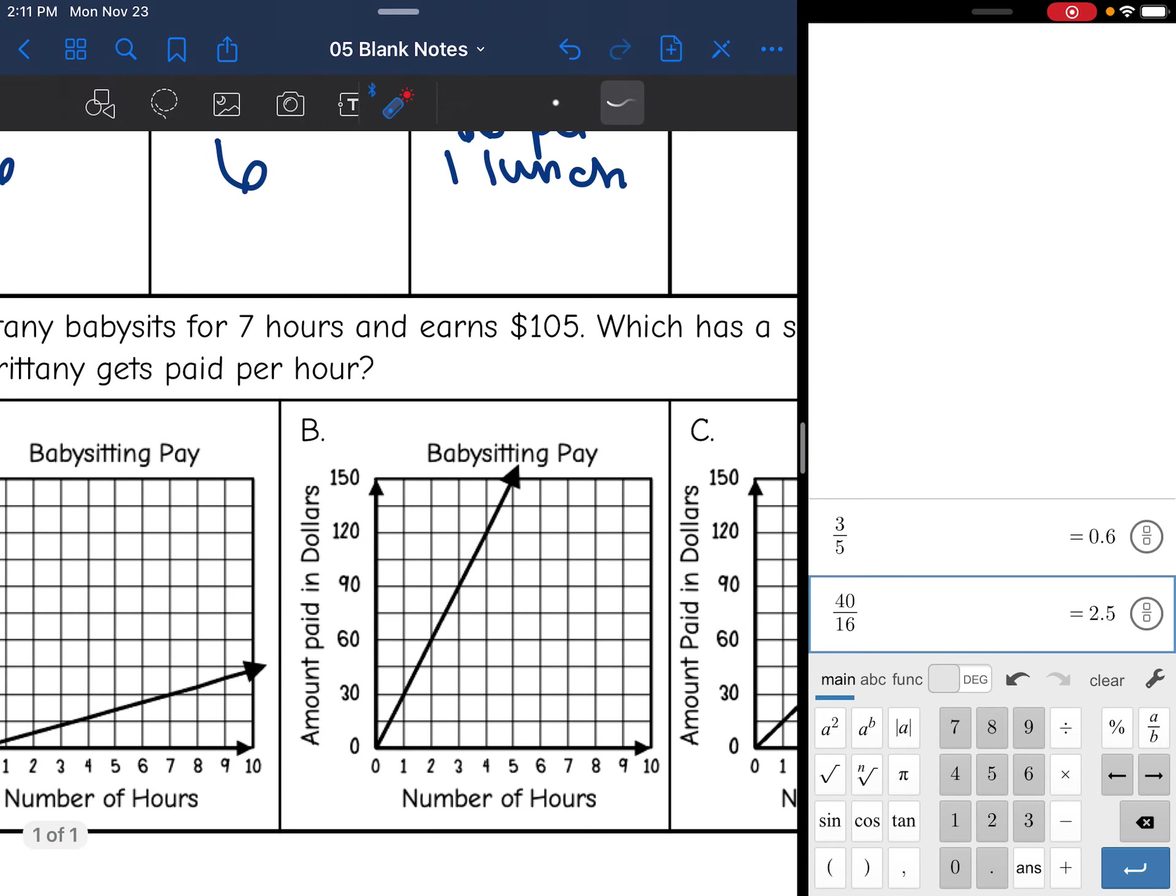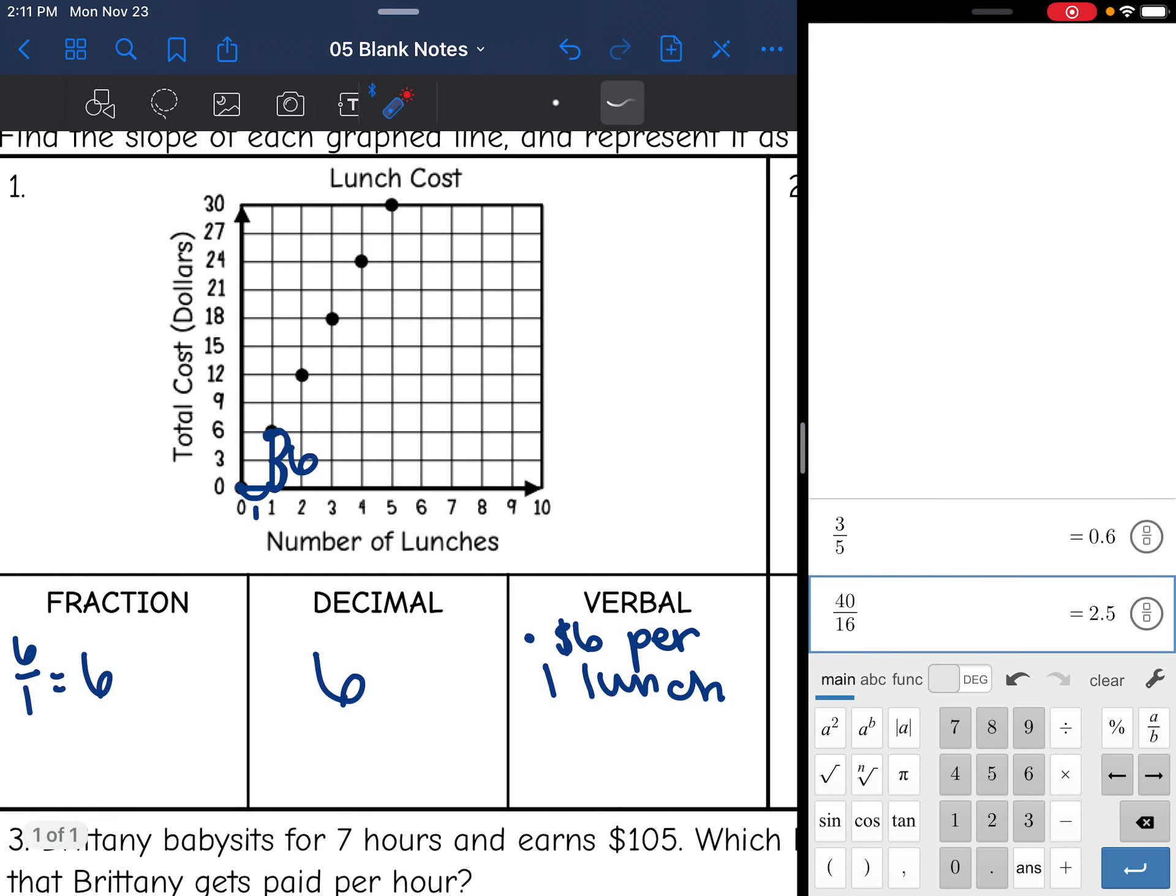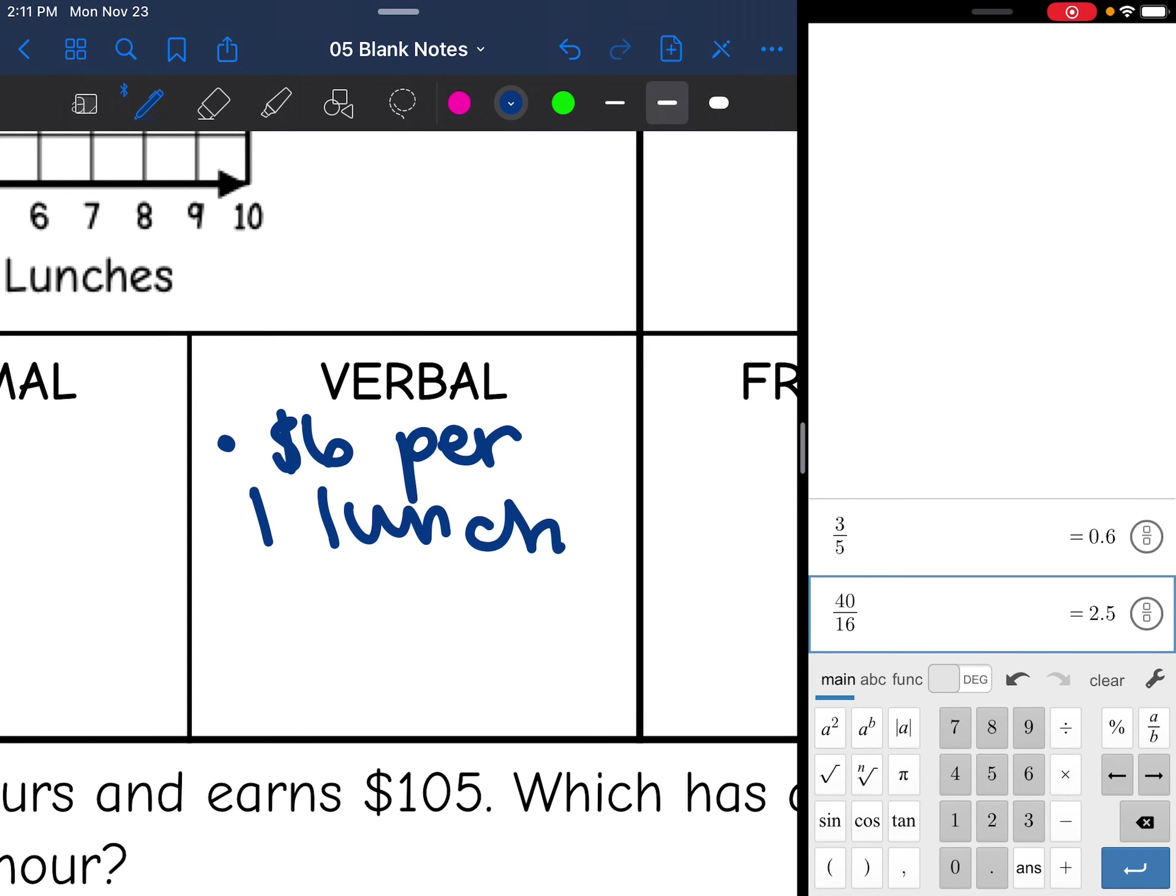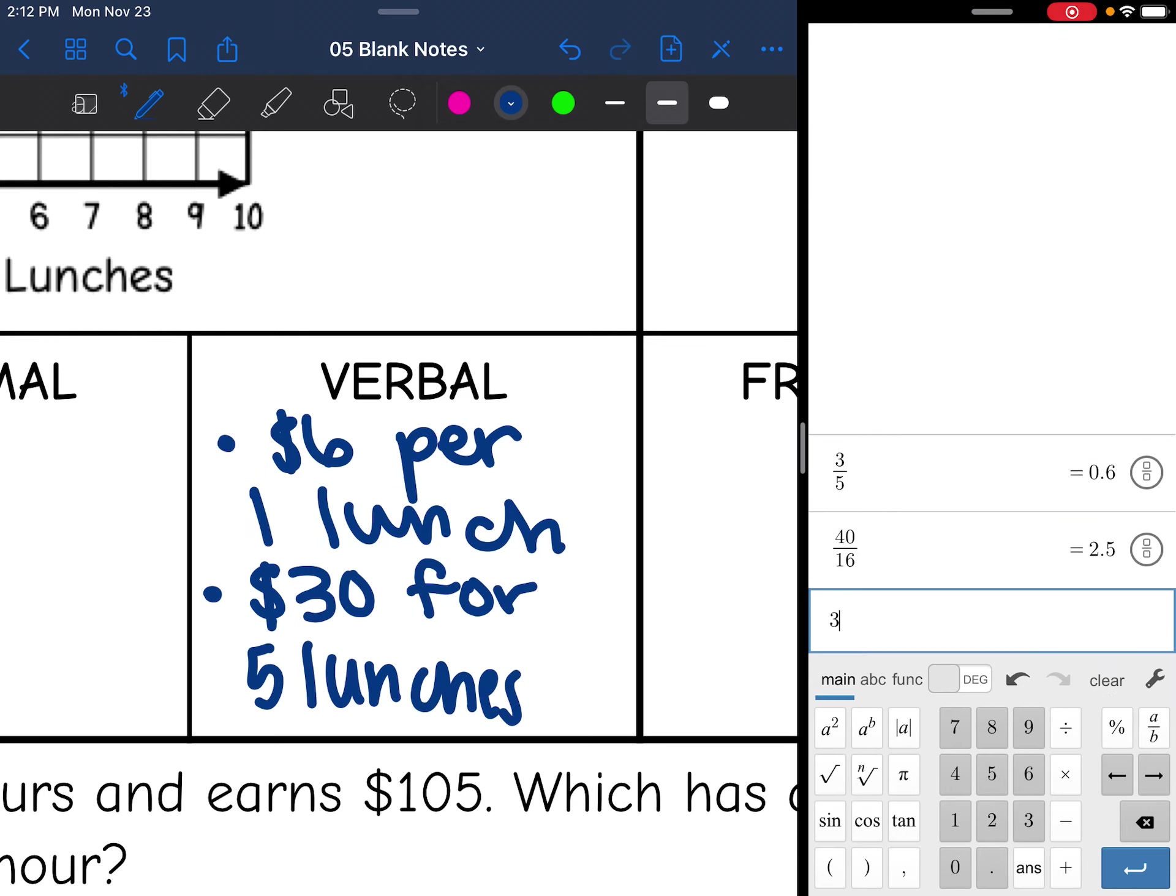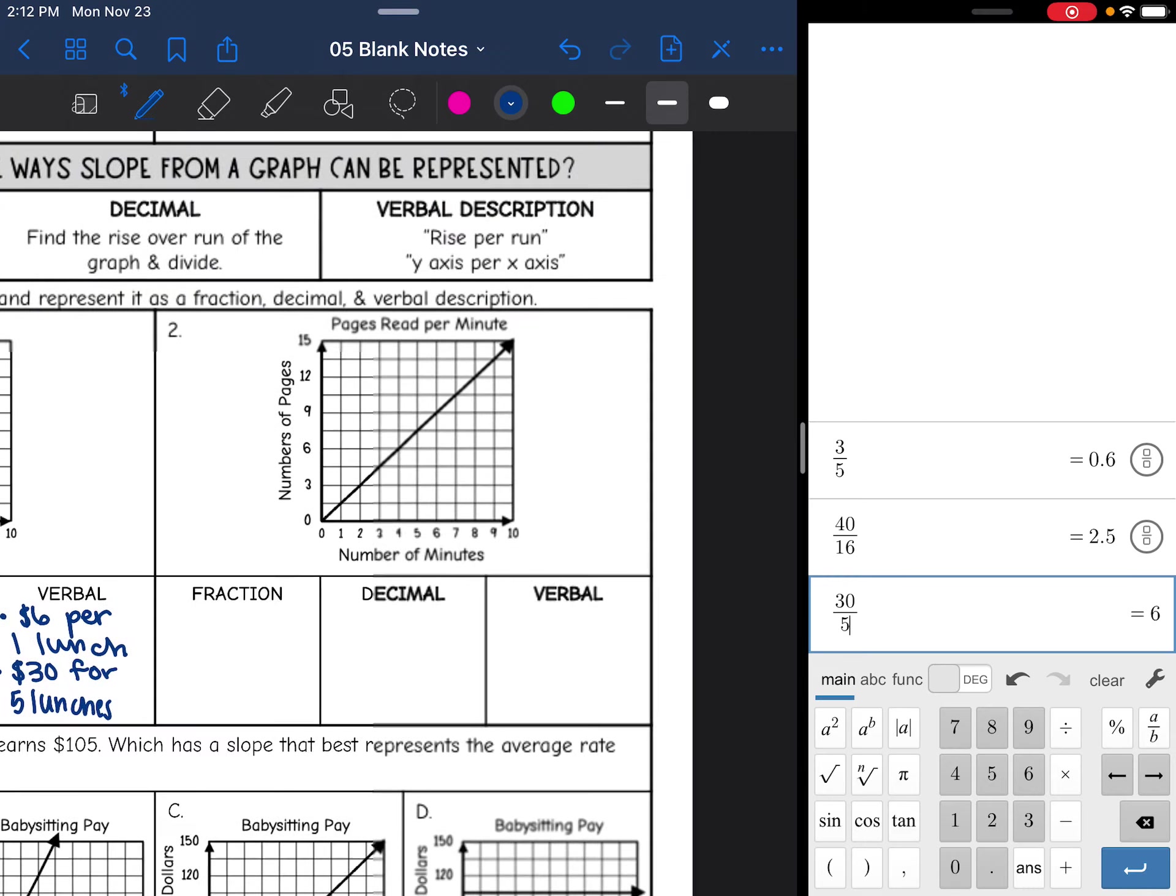If we look at this point right here, it's showing me that 5 lunches cost $30. I could also just multiply this thing by 5. So another verbal representation would be $30 for 5 lunches. And whenever I do 30 divided by 5, I still get that same unit rate of 6.